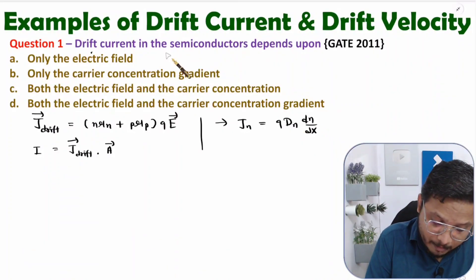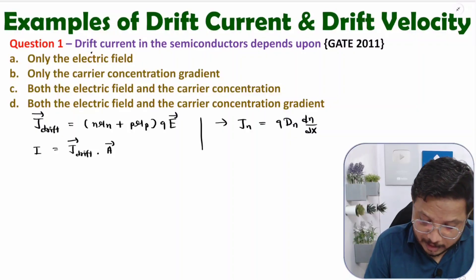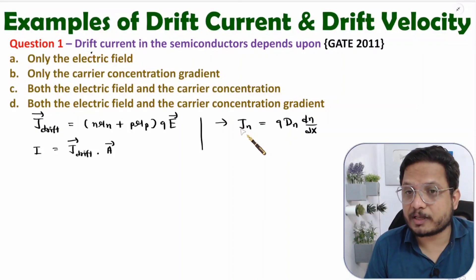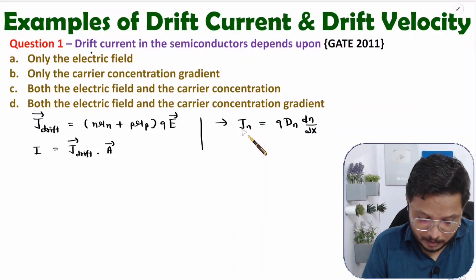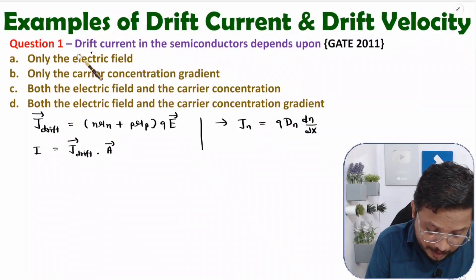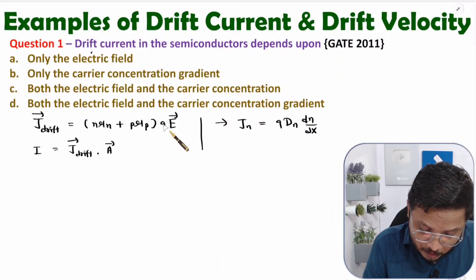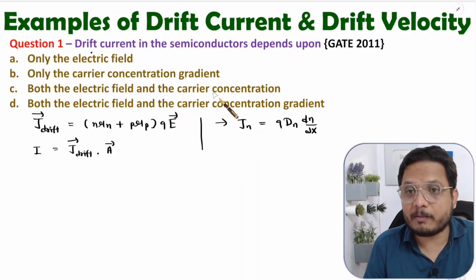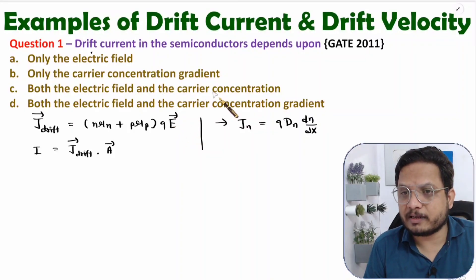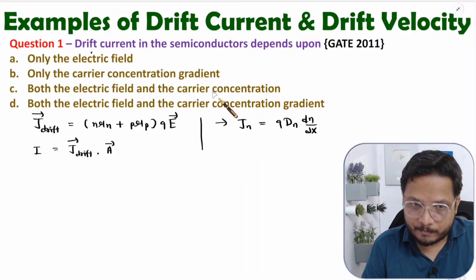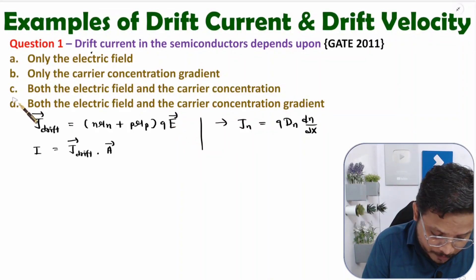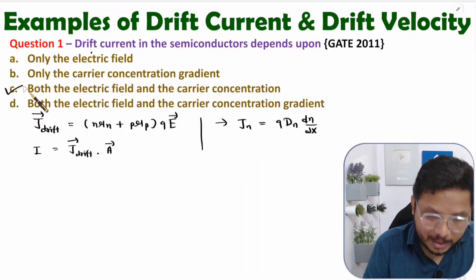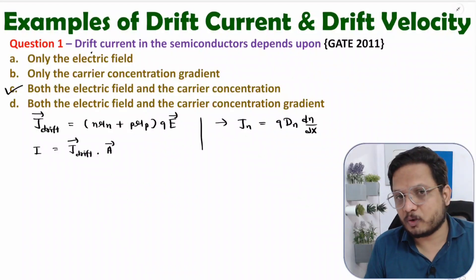This drift current depends on electric field as well as carrier concentration. Carrier concentration gradient comes into the picture when you calculate diffusion current - for n-type, diffusion current density is q·Dn·(dn/dx), where dn/dx is the gradient of carrier concentration. Since we're talking about drift current, not diffusion, option C is the correct choice.